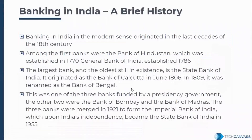The history of banking in India begins with the Bank of Hindustan, established in 1770, and the General Bank of India in 1786, though neither exists today. The oldest surviving bank is SBI — State Bank of India — formulated in 1955. Its origins trace back to the Bank of Calcutta, established in June 1806, which was renamed the Bank of Bengal and eventually became SBI.